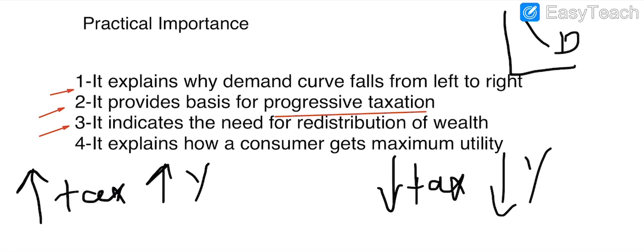Next is redistribution of wealth. This shows how we can redistribute income — more support to poor persons and proportionally more from high-income wealthy persons. Finally, it explains how a consumer gets maximum utility, as it describes the attitude of the consumer towards consumption of goods. When consumption of units increases, the consumer gains more utility until reaching equilibrium. That concludes today's lecture. Please discuss any confusion in the comments and I will answer as soon as possible. See you in the next lecture, Allah Hafiz.